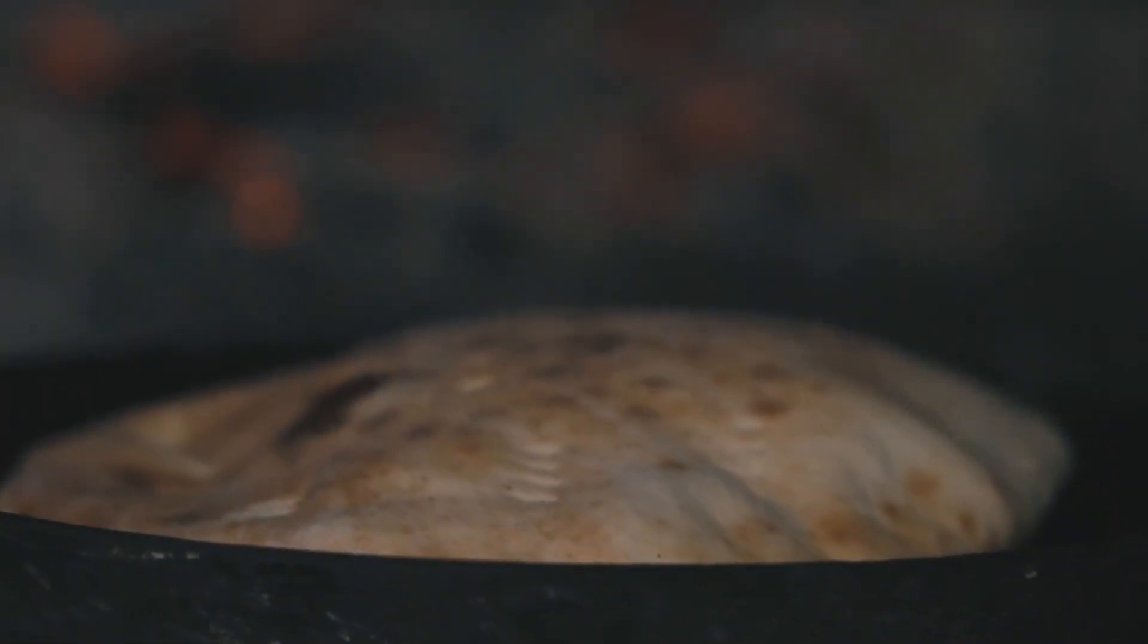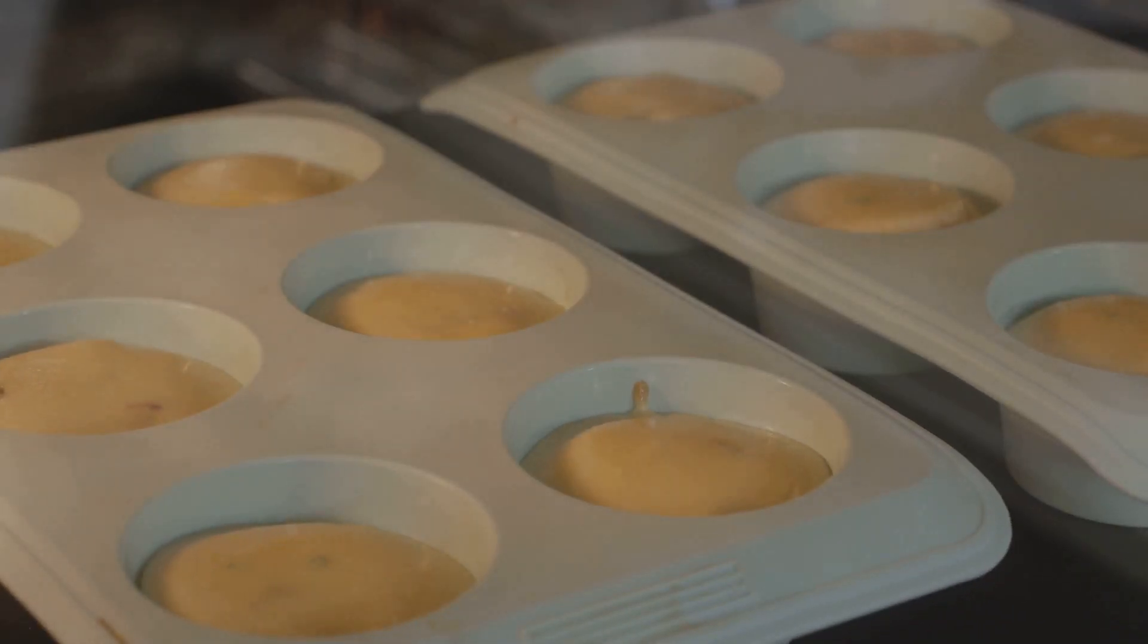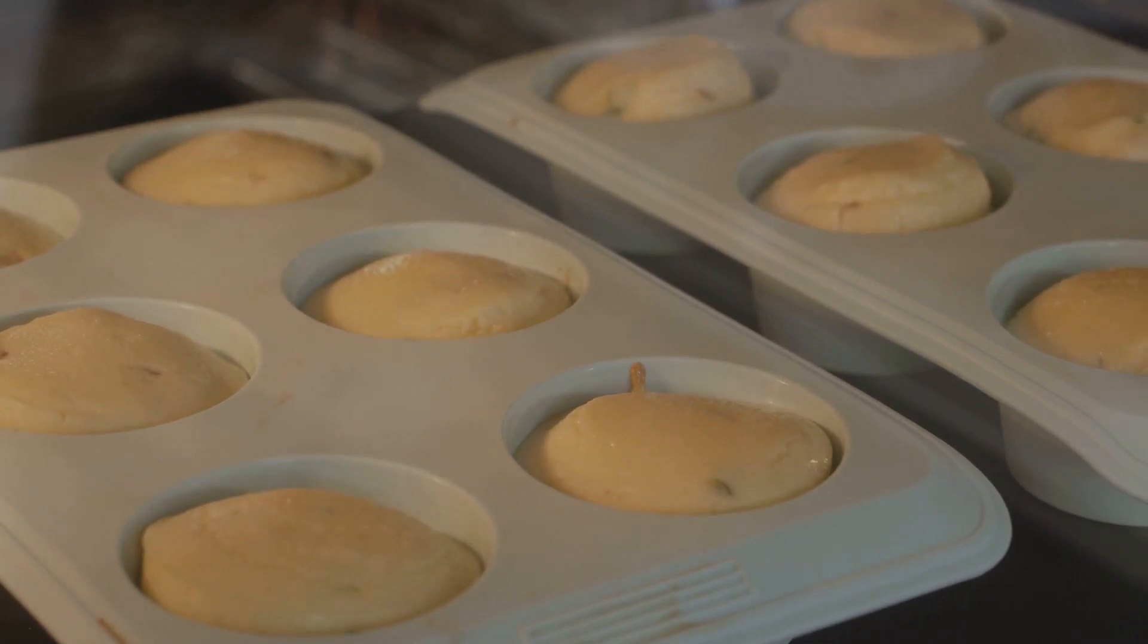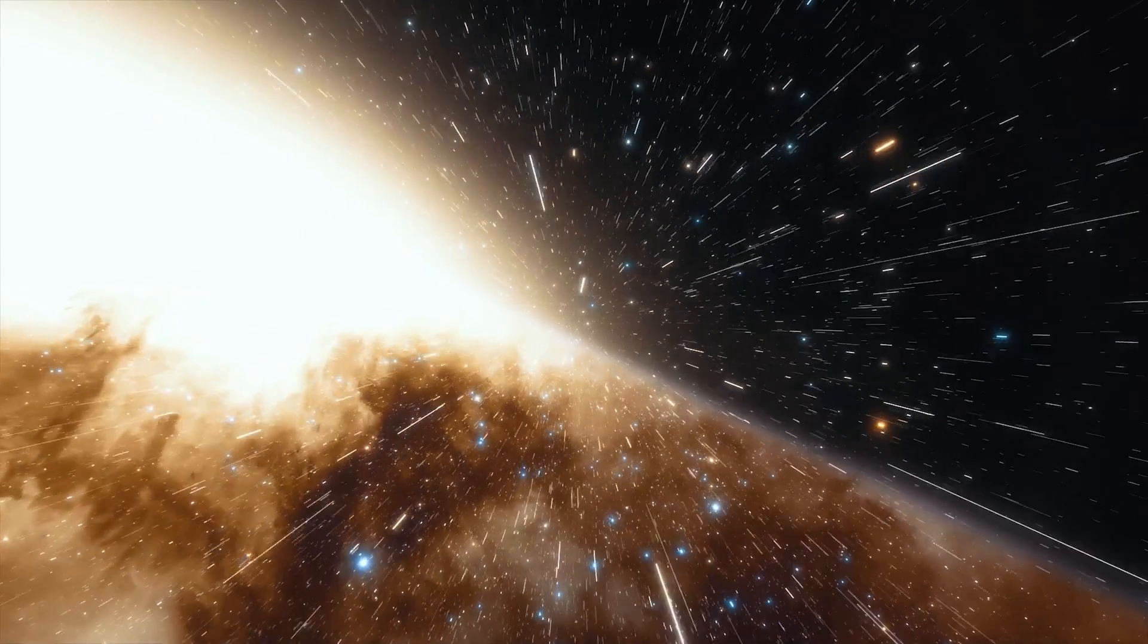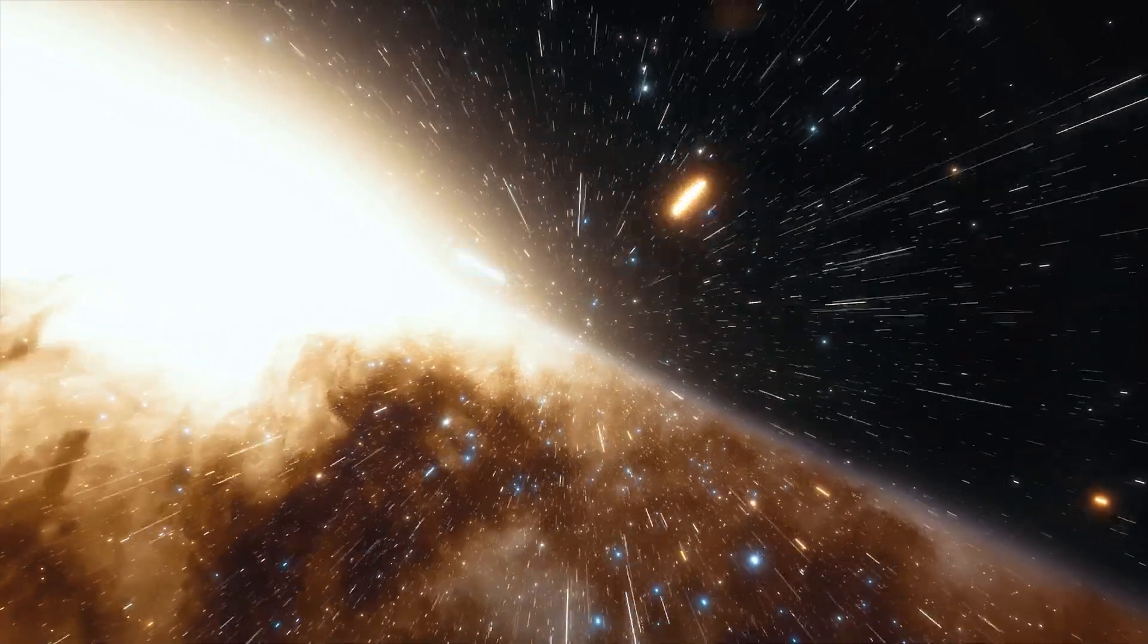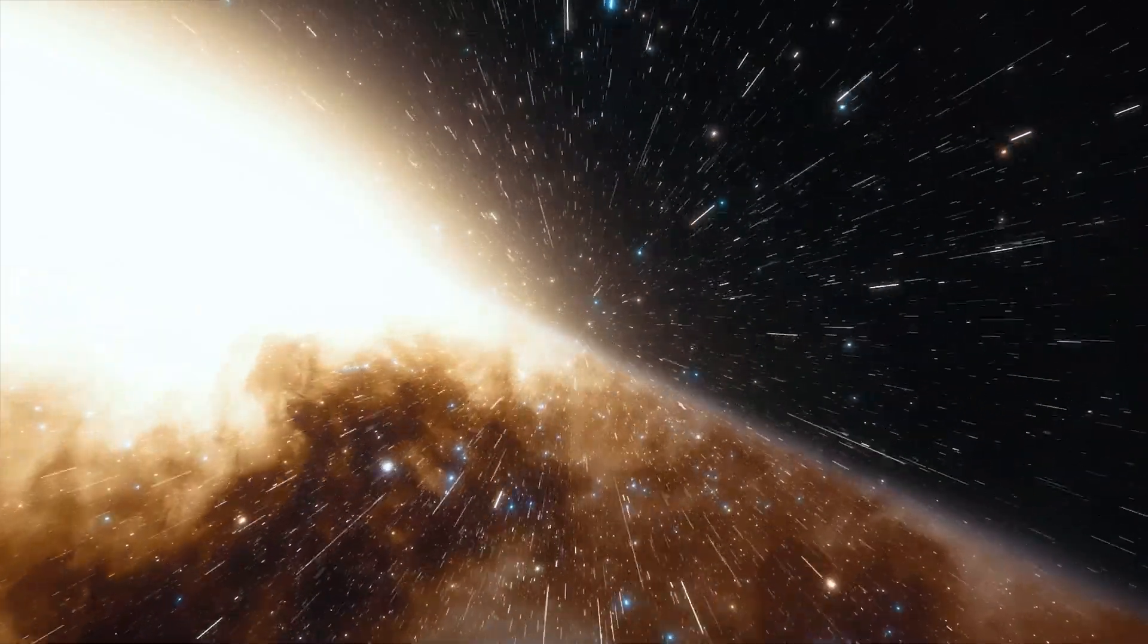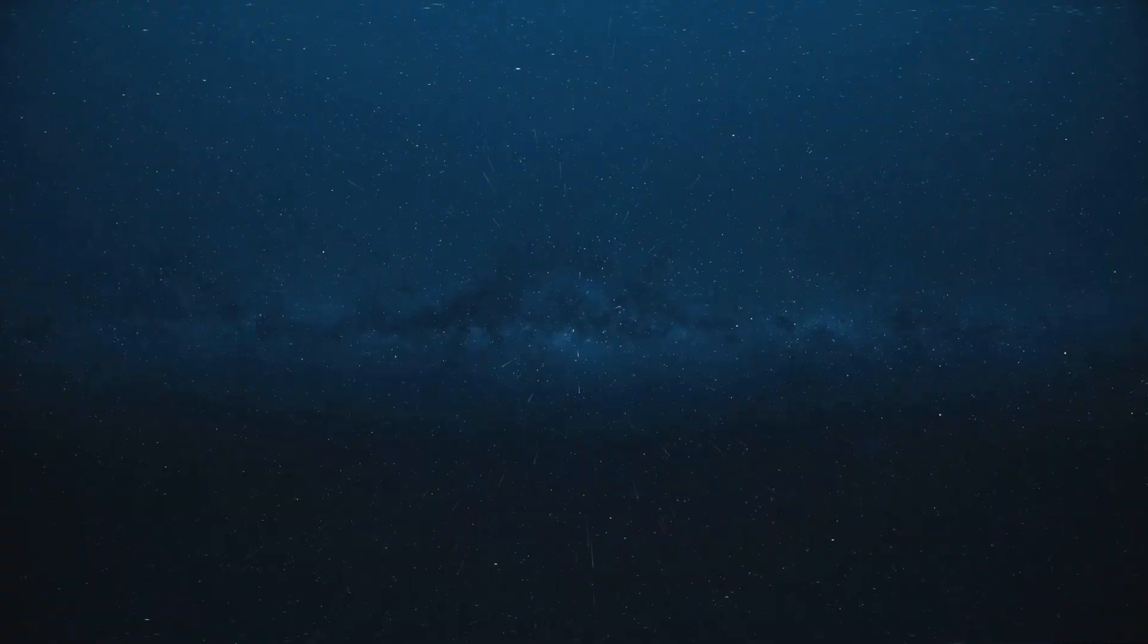Another helpful analogy is a loaf of raisin bread rising in the oven. As the dough expands, the raisins, representing galaxies, move away from each other. The concept of an expanding universe challenged previous notions of a static and unchanging cosmos. It also opened up new questions about the nature of space and time and the ultimate fate of our universe.